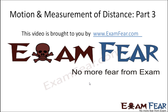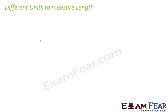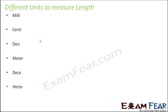This video on motion and measurement of distance part 3 is brought to you by examfear.com. Let us get back to the measurement of length. Meter is the SI unit for length, but besides meter there are many other units for length. The different units of length are: millimeter, centimeter, decimeter, meter, decameter, hectometer, and kilometer.